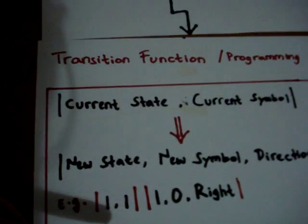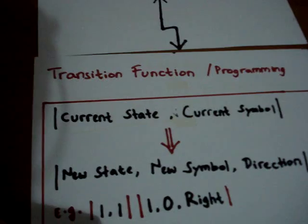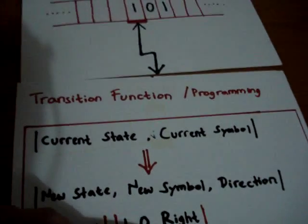Based on the programming in the transition function, it remains in state one, changes the symbol to zero, and moves one square to the right.